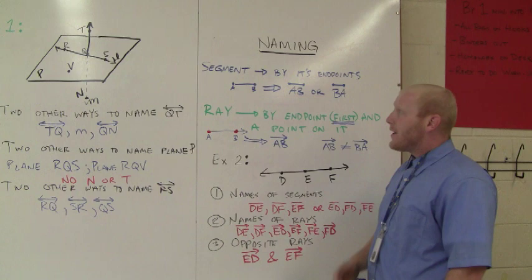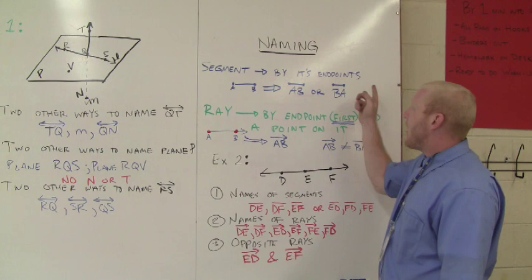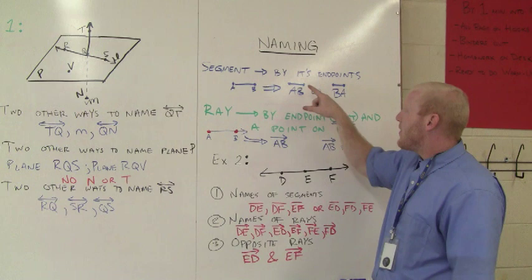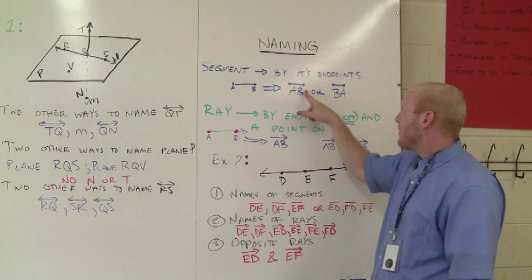When we name a segment, we name it by its two endpoints. So this, we would say, would be read as segment AB or segment BA. As you see here, this is my symbol. I have two endpoints. That's how I know this is a segment. I don't have the arrows because this isn't a line. It doesn't go on forever. It's a segment. So it's segment AB or BA.